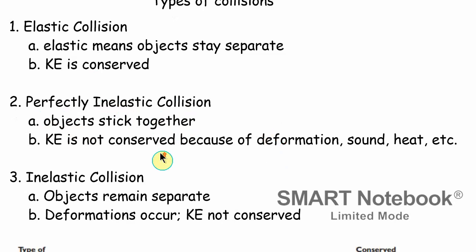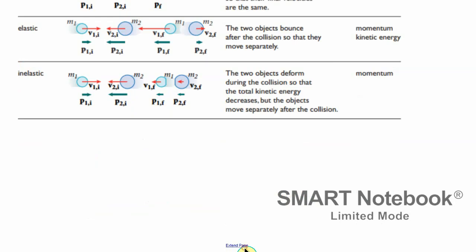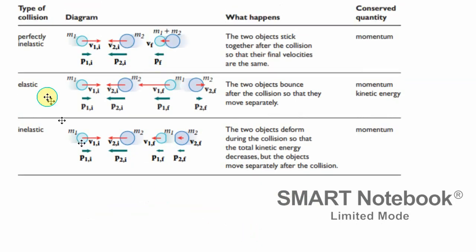Inelastic collisions on the other hand, objects are going to remain separate. Deformations can occur because deformations occur. Kinetic energy is not conserved. So here we have a little diagram of our different interactions. So perfectly inelastic we're going to stick together. Inelastic we're going to be moving separately. So in this case you have two balls bouncing off of each other and in an elastic collision they're going to be moving separately but there's deformations and things like that. The only one where both of them are conserved are elastic collisions.